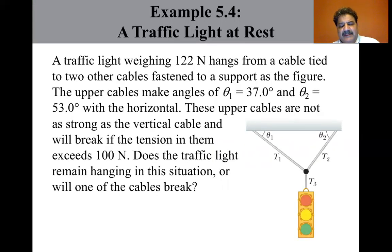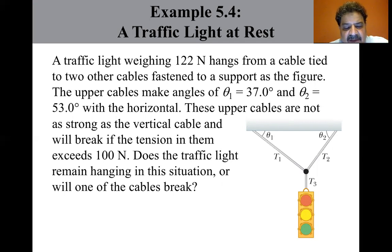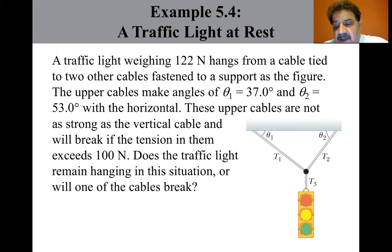Let's look at a traffic light at rest. A traffic light weighing 122 newtons hangs from a cable tied to two other cables fastened to a support. The upper cables make angles of theta1 equals 37 degrees and theta2 equals 53 degrees with the horizontal. These upper cables will break if the tension exceeds 100 newtons. We assume the cables do not break and nothing is moving, so no part of the system is accelerating. We model the light as a particle in equilibrium, and the knot holding the cables together is also modeled as a particle in equilibrium.